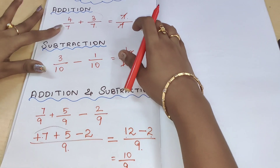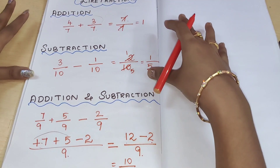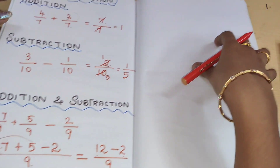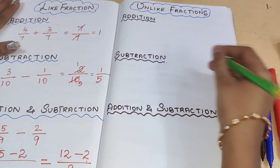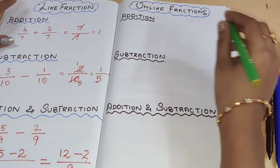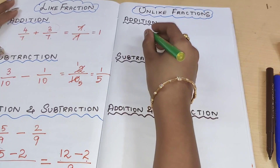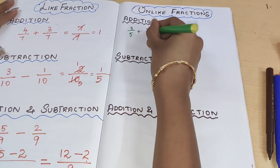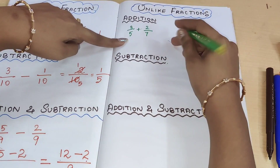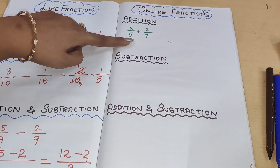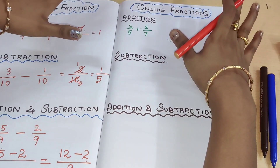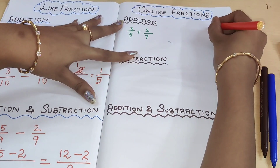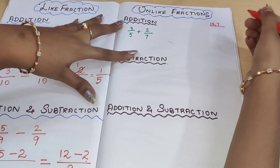So here we have seen addition in like fractions, subtraction in like fractions, and addition and subtraction combined in like fractions. Next, let us move on to unlike fractions — solving addition and subtraction in unlike fractions. Let us take 3 by 5 plus 2 by 7. The denominators 5 and 7 are different, so this is an unlike fraction. Whenever you see different denominators, immediately take both denominators and find the LCM.